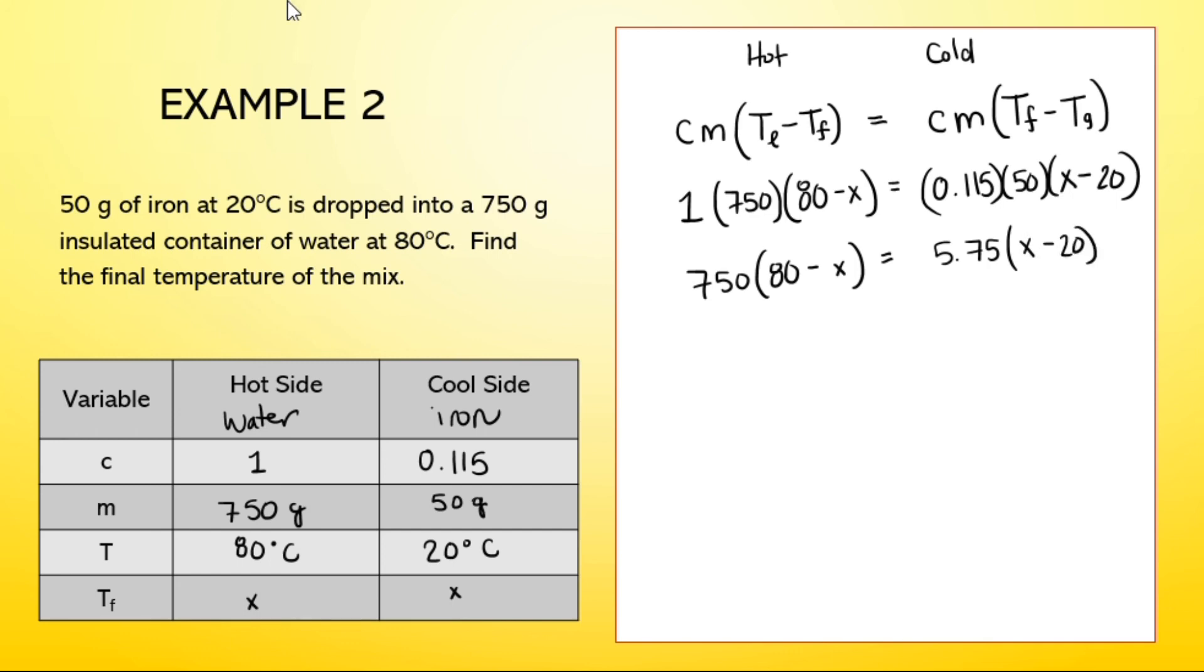Next step is distribution. 750 times 80 is 60,000. And then 750 times minus X is minus 750X. 5.75 times X is just 5.75X. And 5.75 times negative 20 is negative 115.